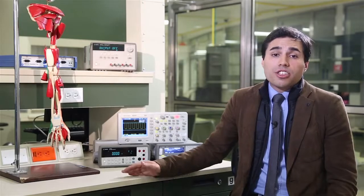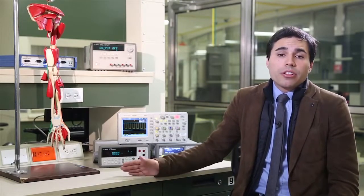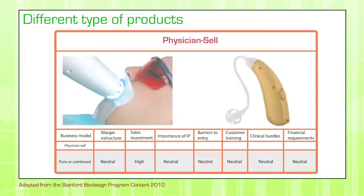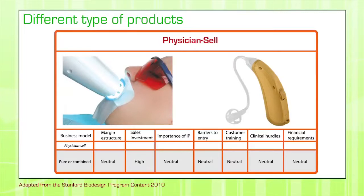Finally, there is the direct physician sales business model, in which the physician acts as a salesperson promoting use of the device. Examples include teeth whitening systems or earbuds for hearing aids. Clinical hurdles and other requirements tend to be quite low and neutral in range. Nonetheless, the sales investment is probably going to be high because you have to convince the physician before they will actually try to sell your product.